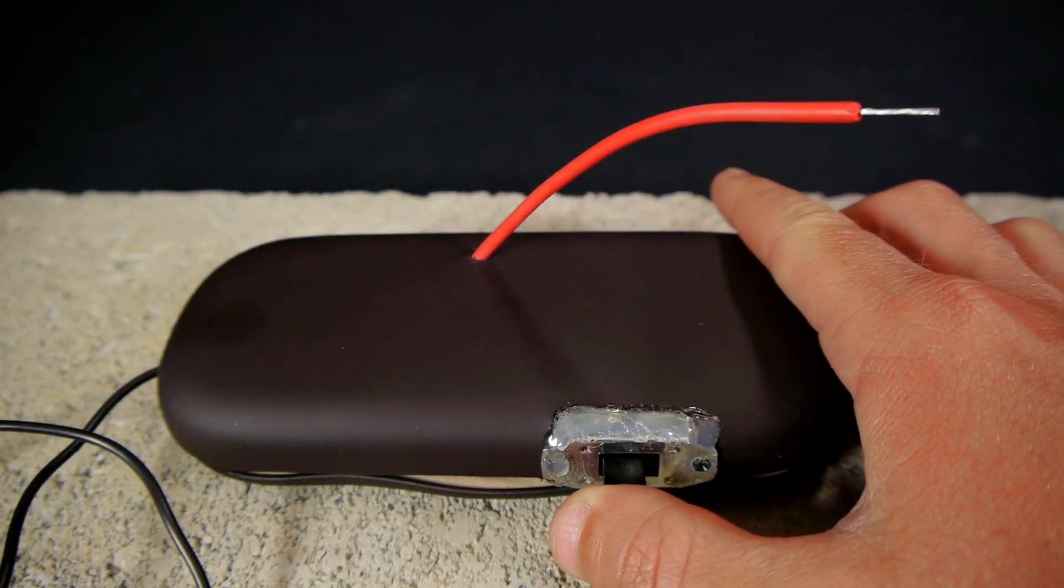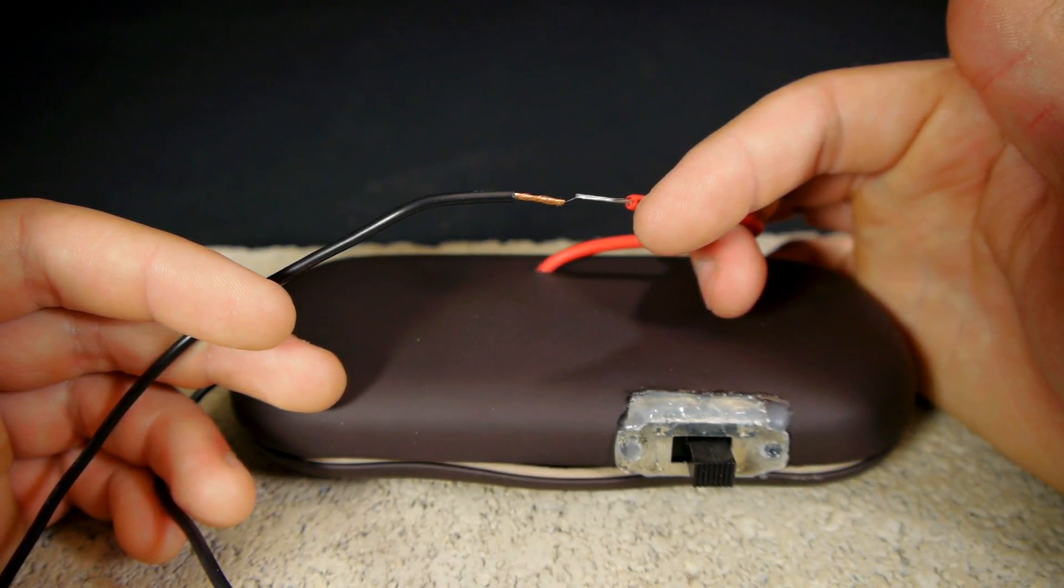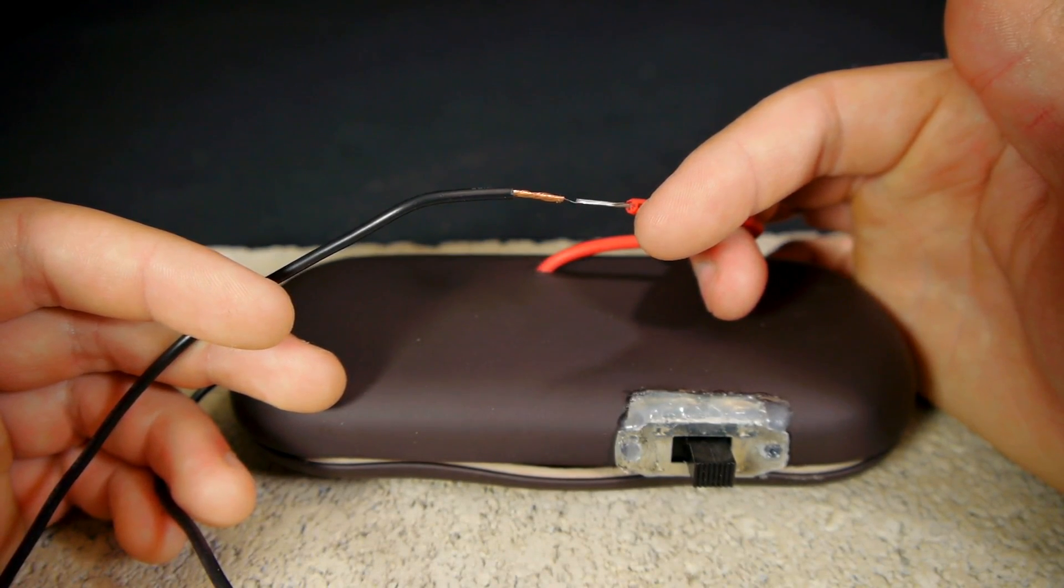With the flick of a switch electrons start flowing from the red wire. A healthy arc should now be created between it and the ground wire when brought in close proximity.